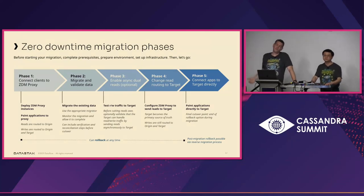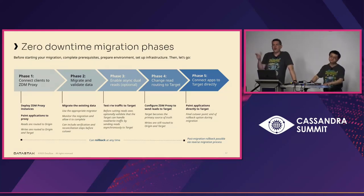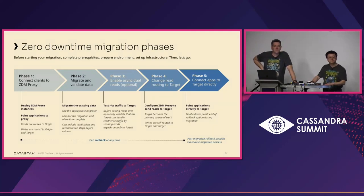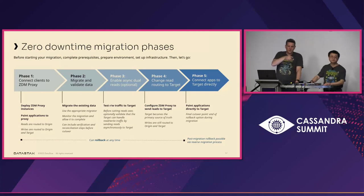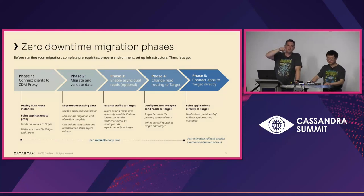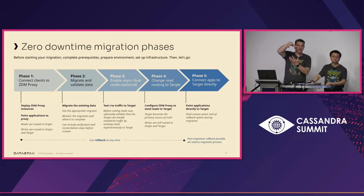Oftentimes people just say: let's start at time X and then start the data migration. We've often seen them do the data migration while the proxy is in place. Regarding data being updated along the way: since Cassandra uses last-write-wins semantics, when you write historical data the timestamp of that write is in the past. If new data comes in via the proxy, it'll have a newer timestamp. Those reconcile naturally and the new data takes precedence over the older data.